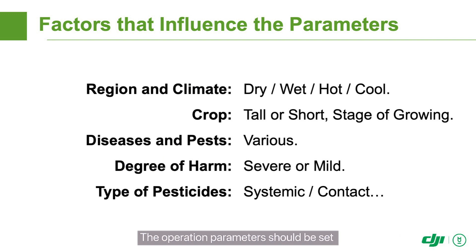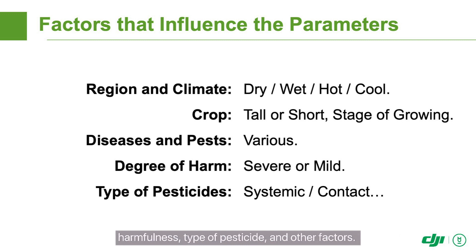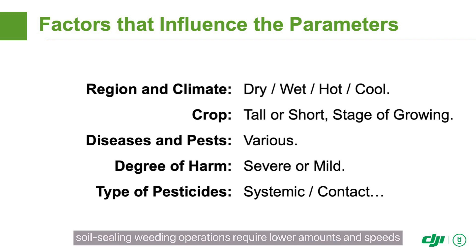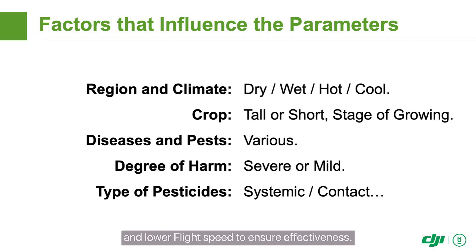The operation parameters should be set after considering the region, crop, type of disease or pest, harmfulness, type of pesticide, and other factors. No one set of parameters is suitable for all operations. Taking a rice field as an example, soil sealing weeding operations require lower amounts and speeds, while stem and leaf application weeding requires higher spraying amount and lower flight speed to ensure effectiveness.